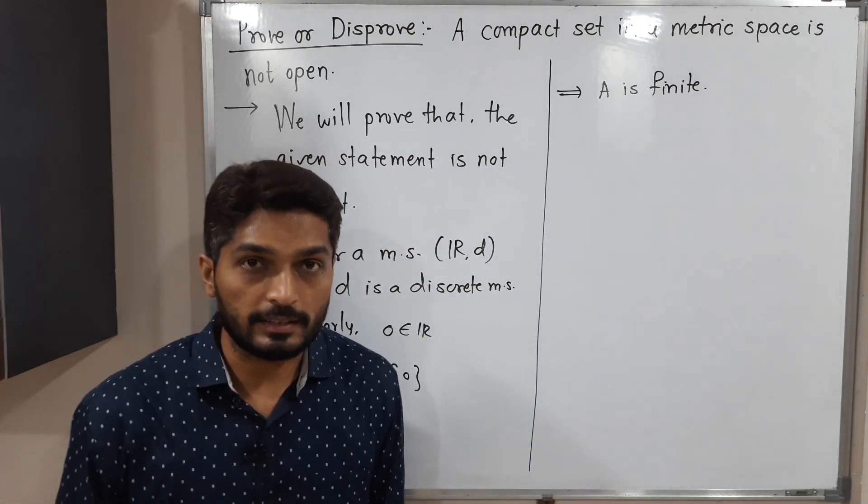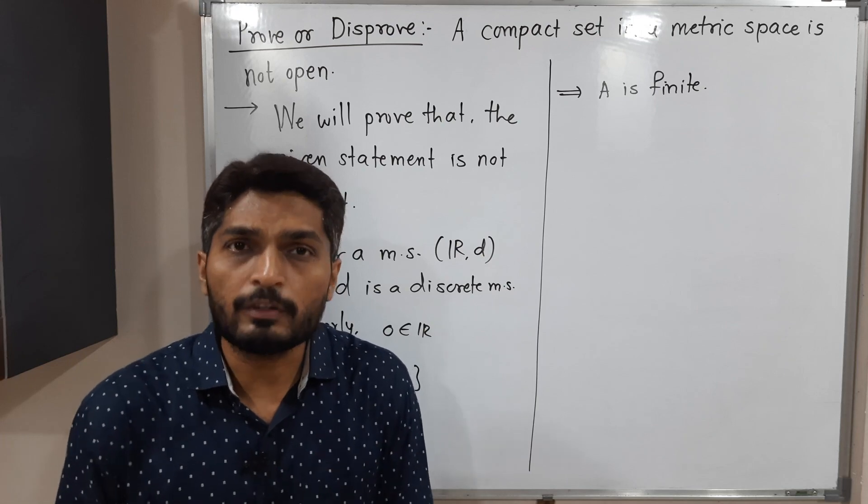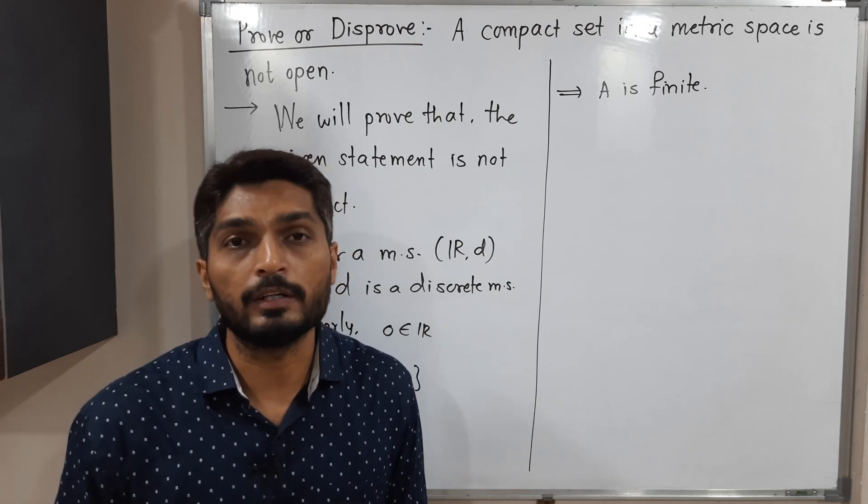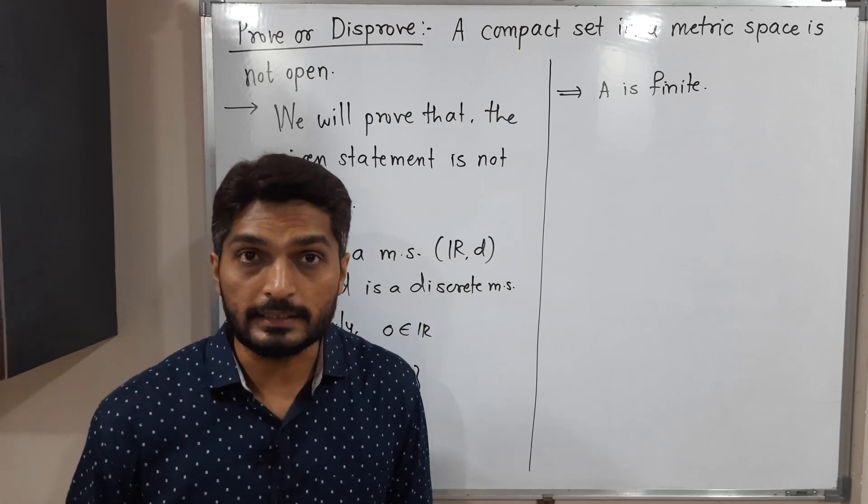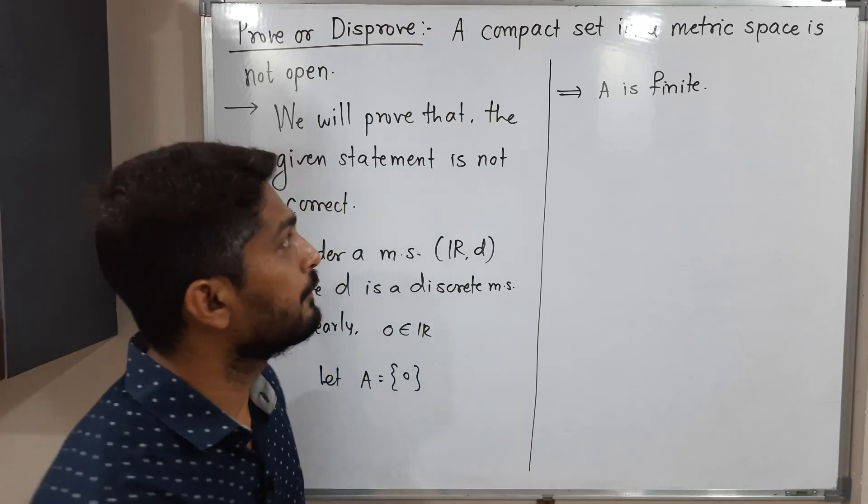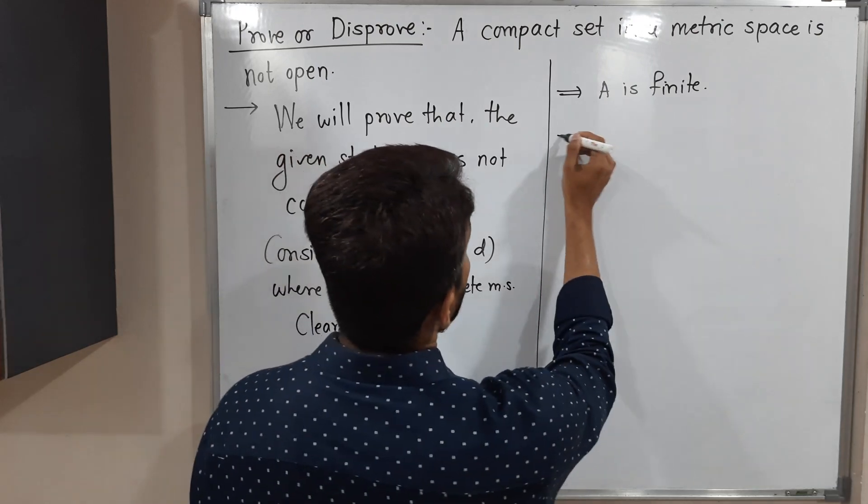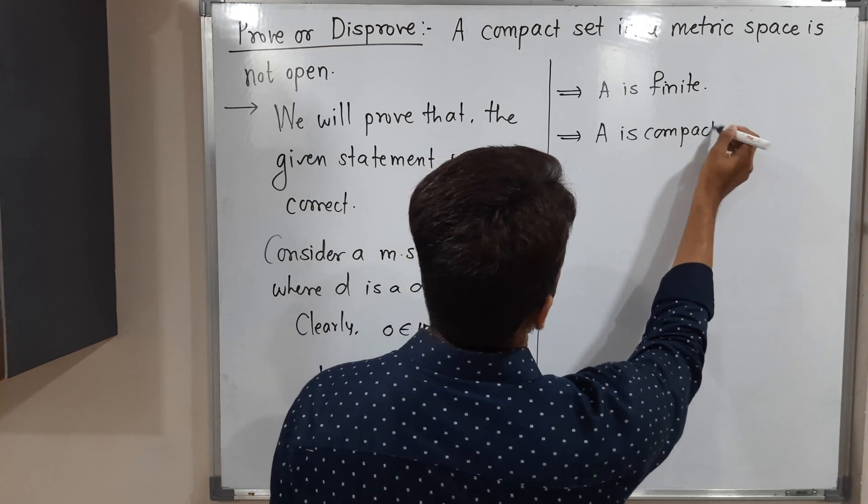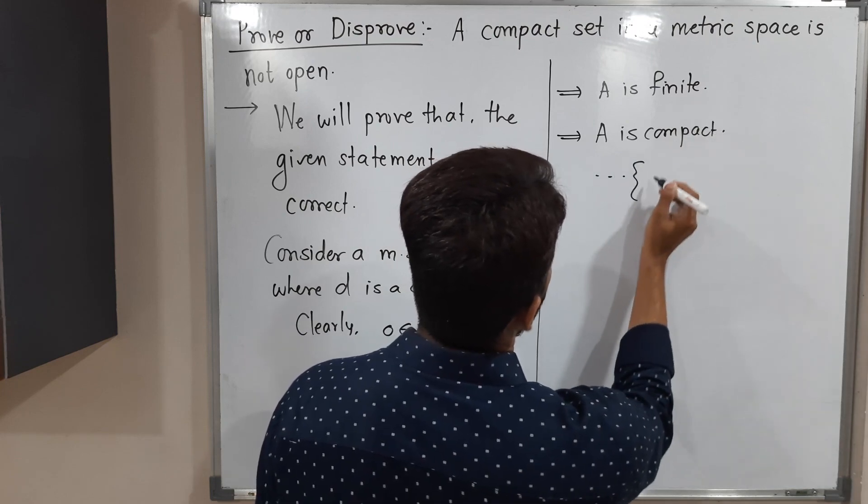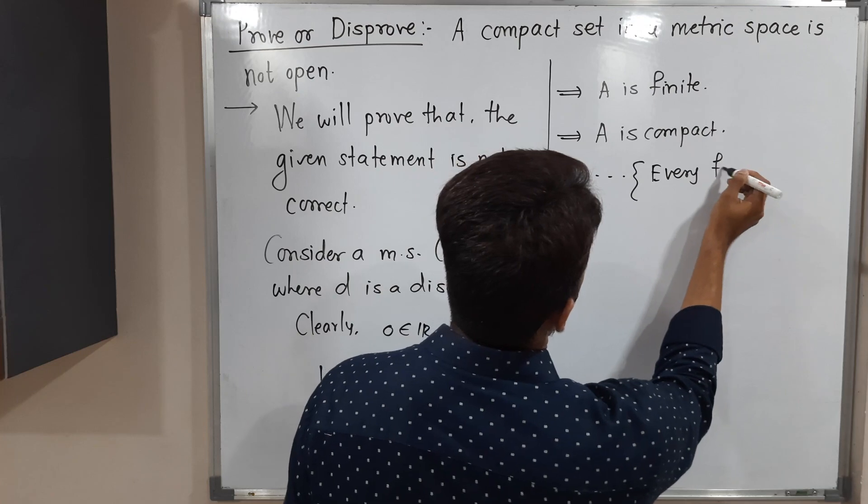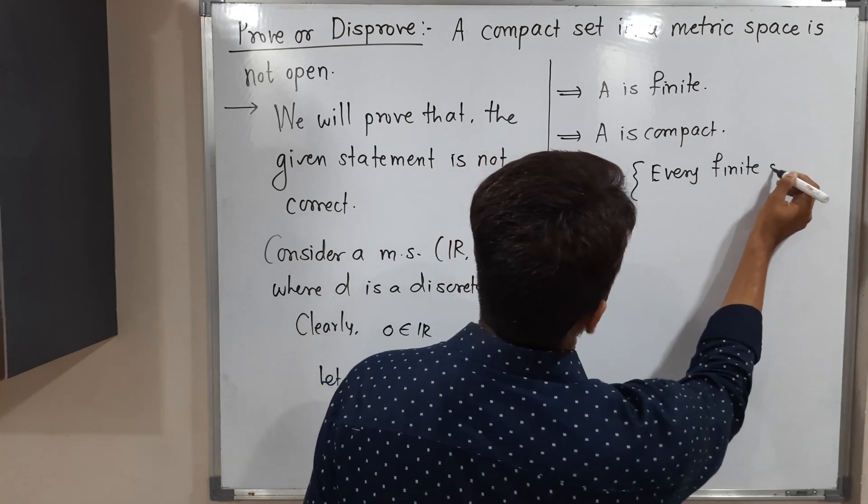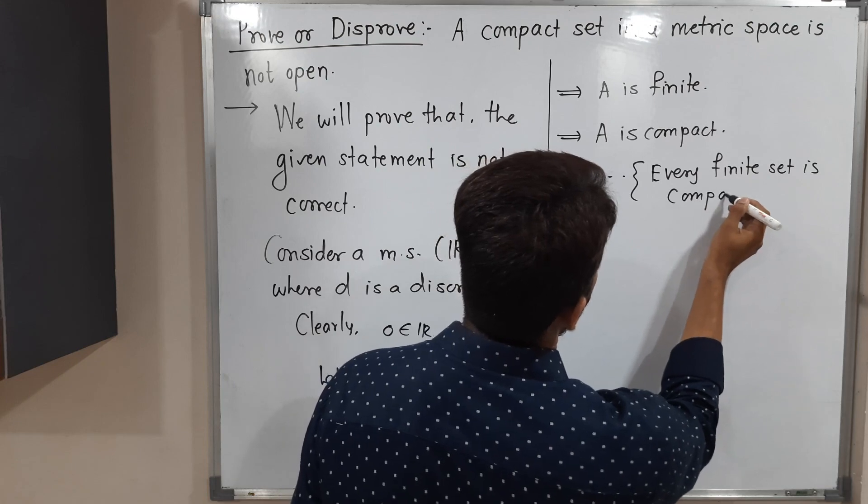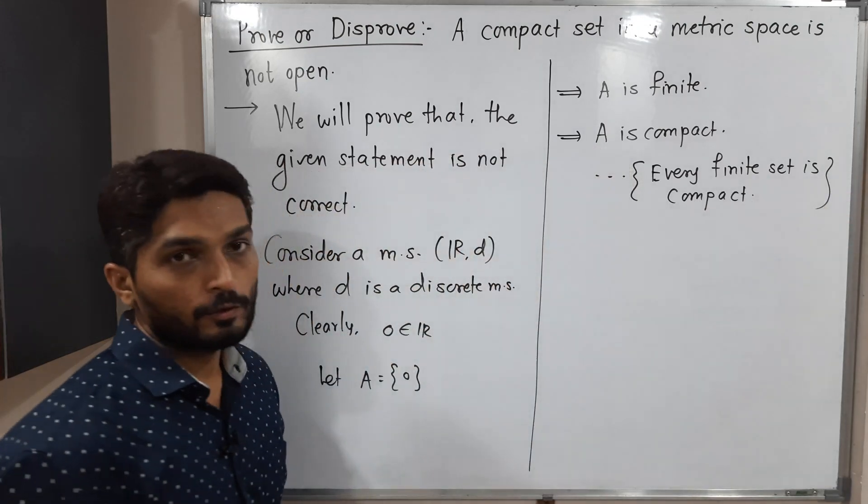That result is: every finite set is compact. In previous videos, we have already covered the proof of this result. If you want, you can check the playlist and you will easily get the video. So A is finite, which implies A is compact. The reason is: every finite set is compact. That's why we can say A is compact.